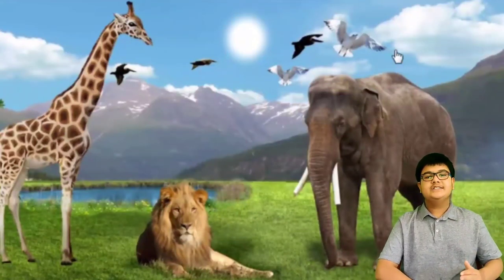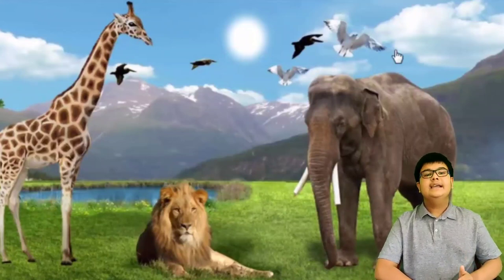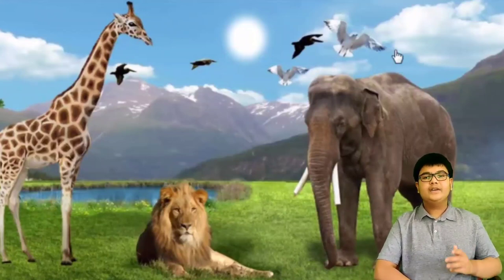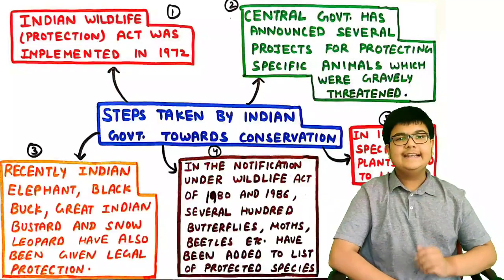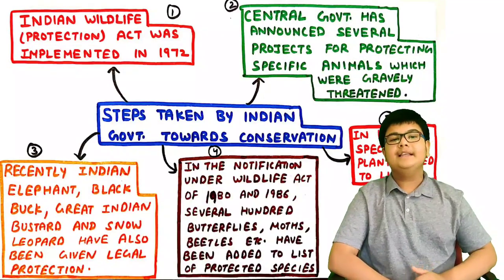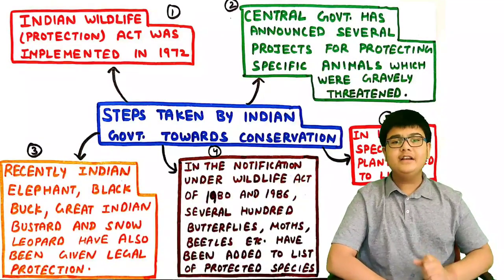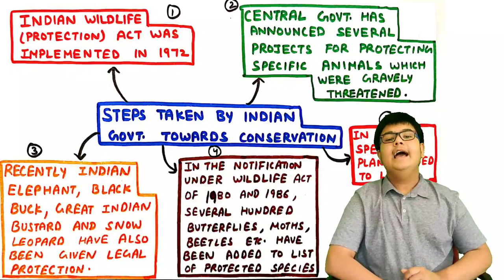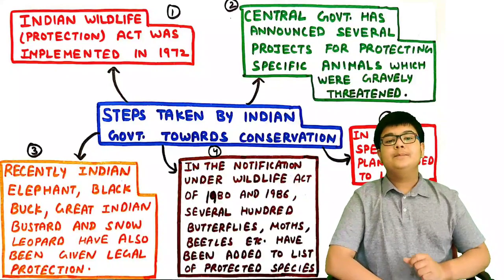Fifth, setting up of national parks and sanctuaries — various sanctuaries, wildlife parks and national parks were set up by the government in various parts of the country. The second step taken by the government is that the central government has announced several projects for the protection of specific animals which are greatly threatened.